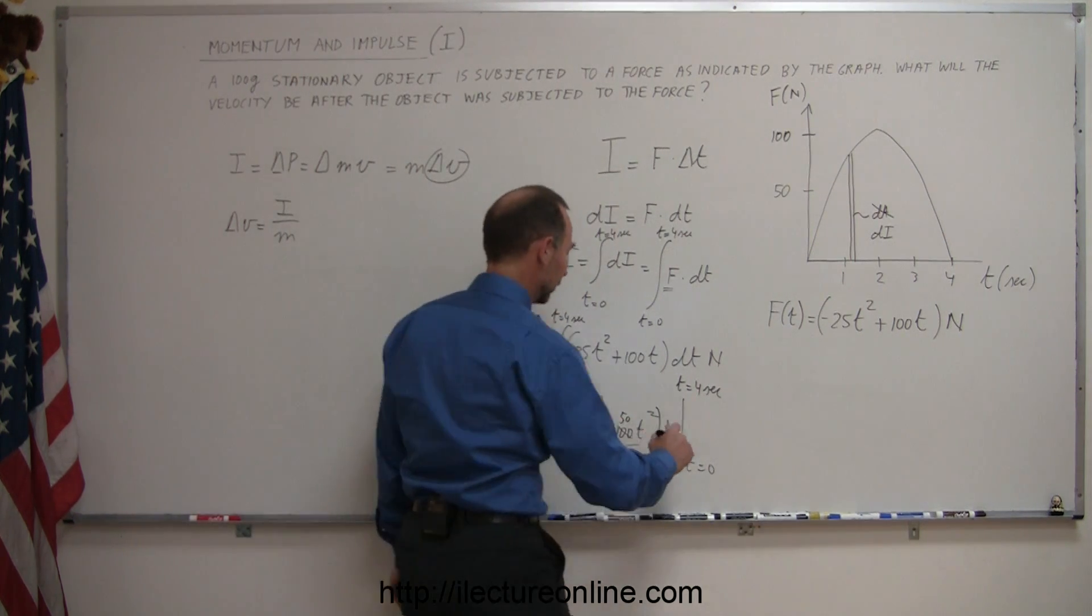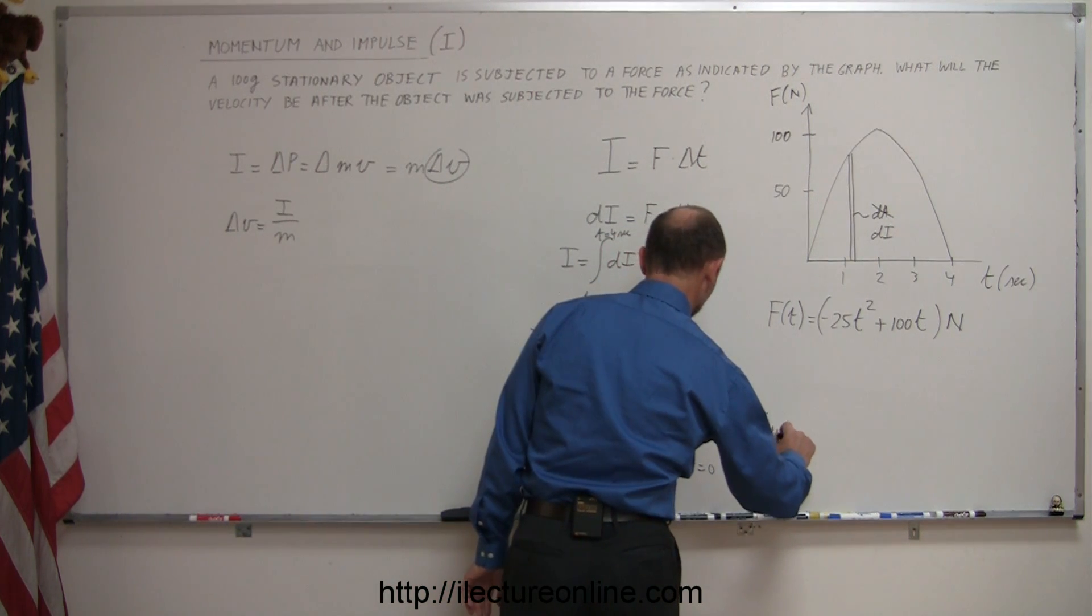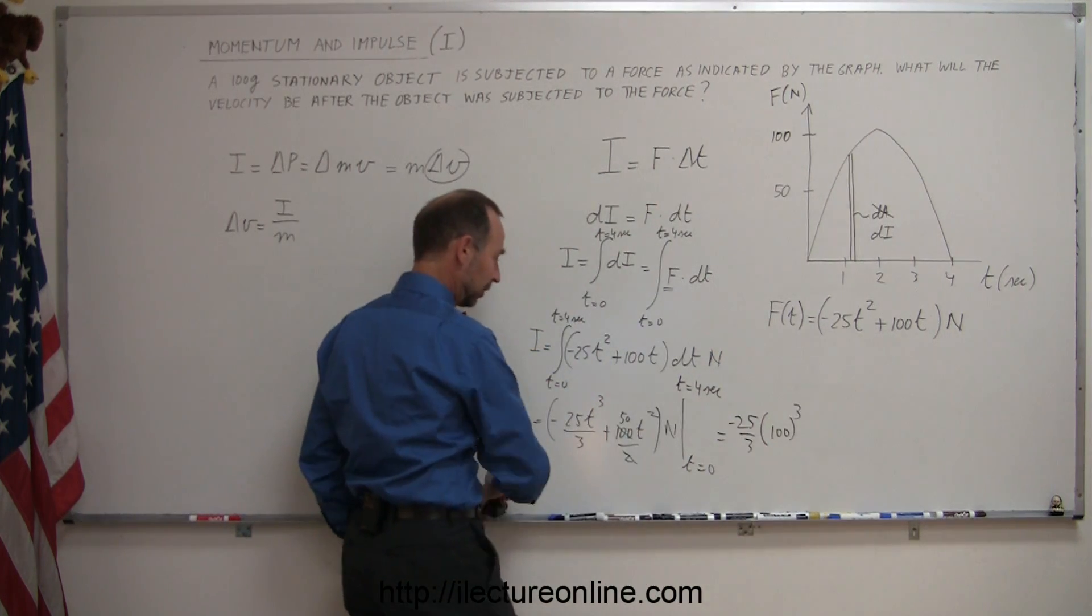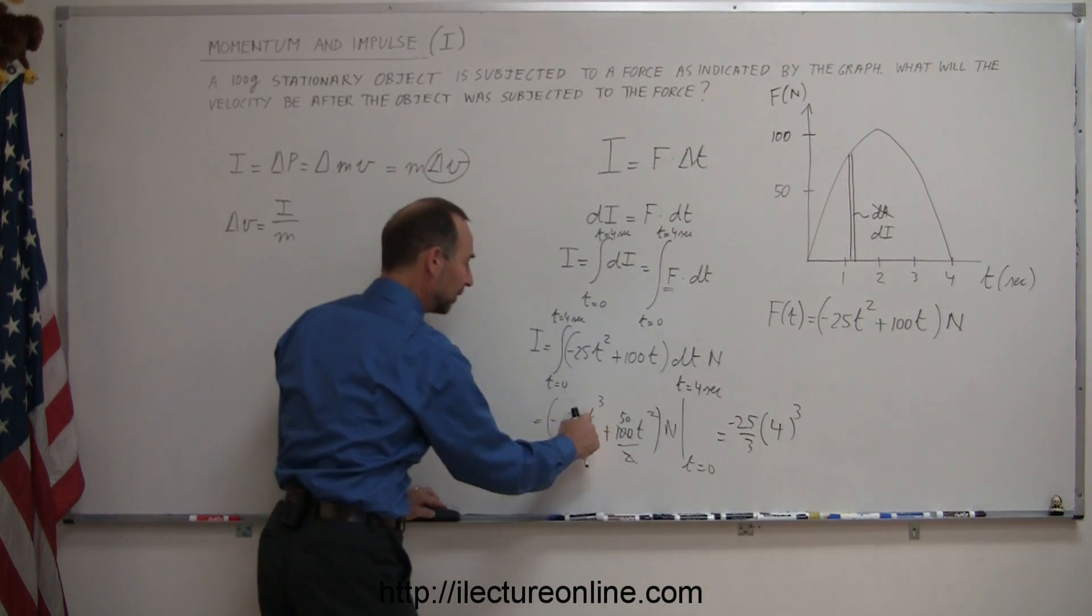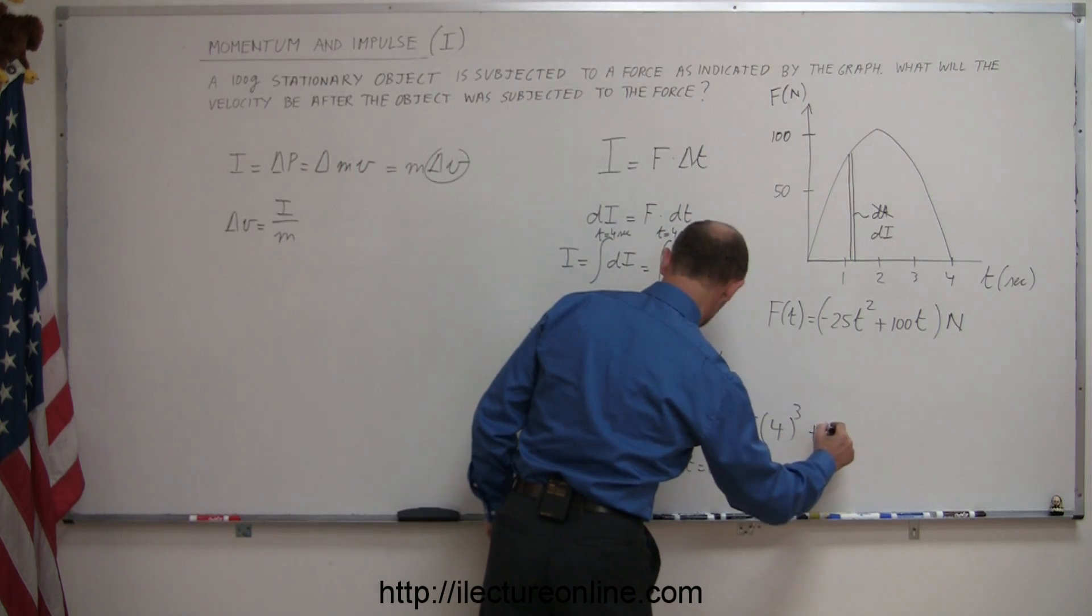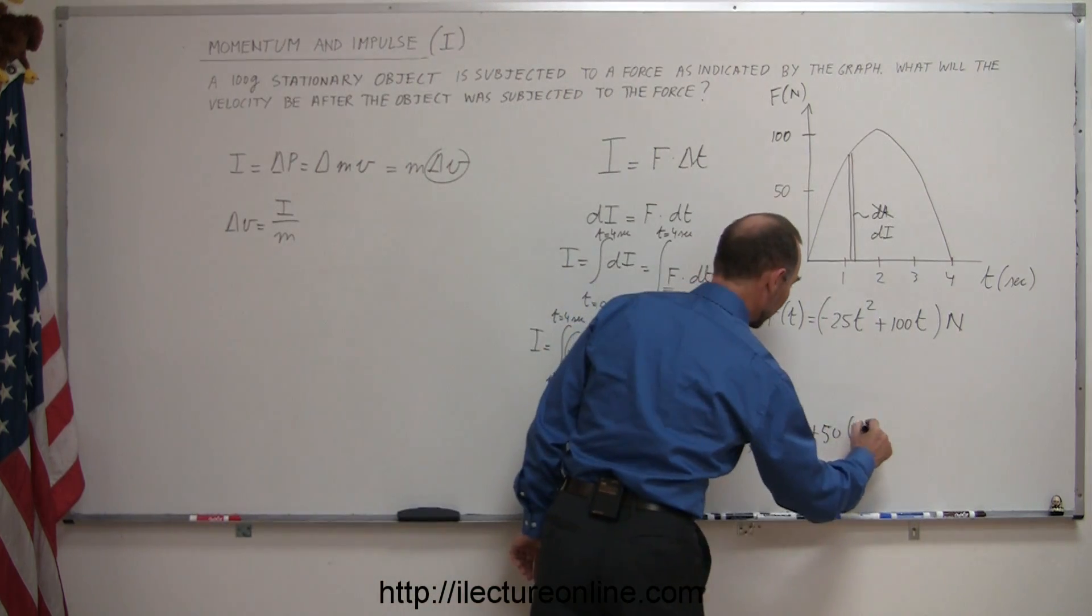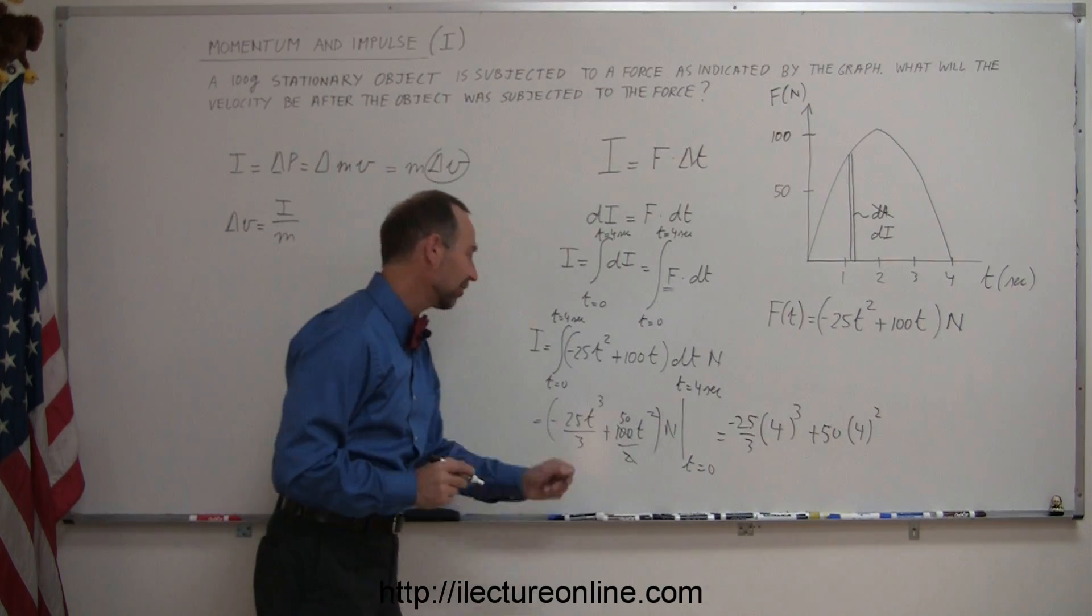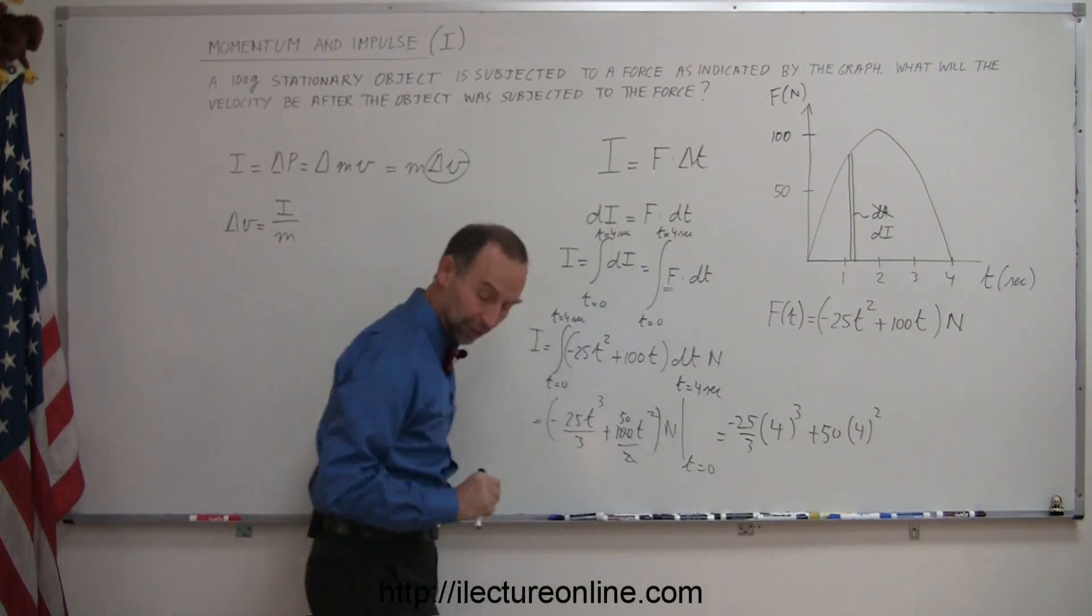Now plug in the upper limit. This gives us -25/3 times 4³, plus 50 times 4². When I plug in the lower limit of zeros, I get nothing. So this is -25/3 times 64 plus 50 times 16.